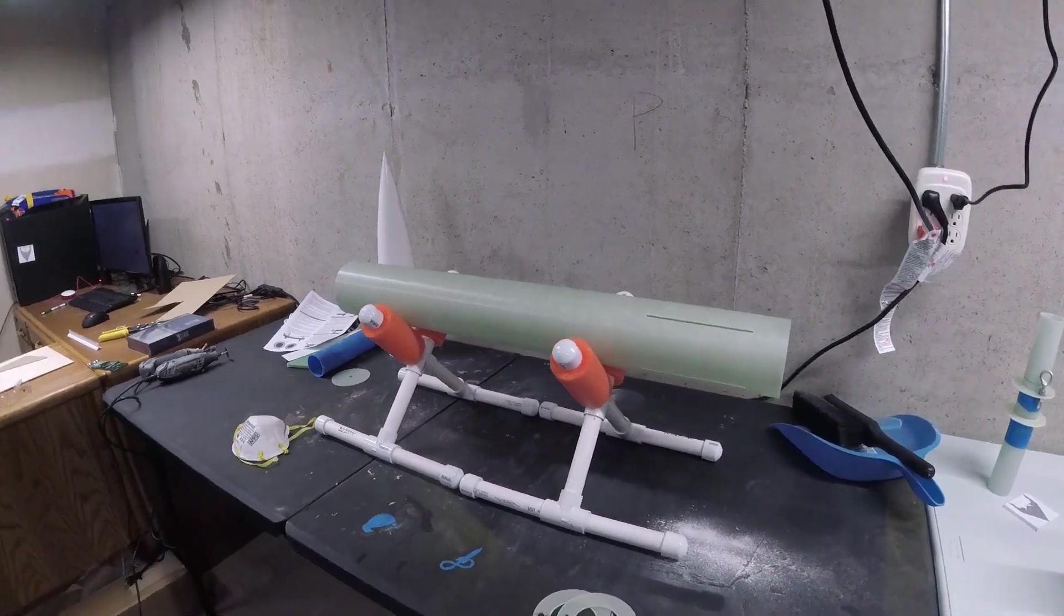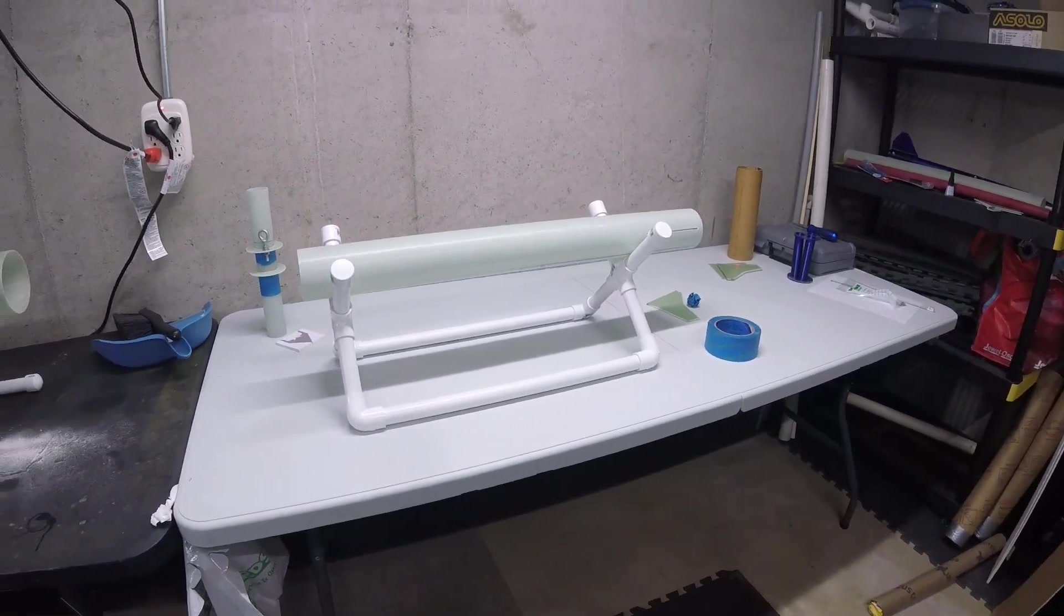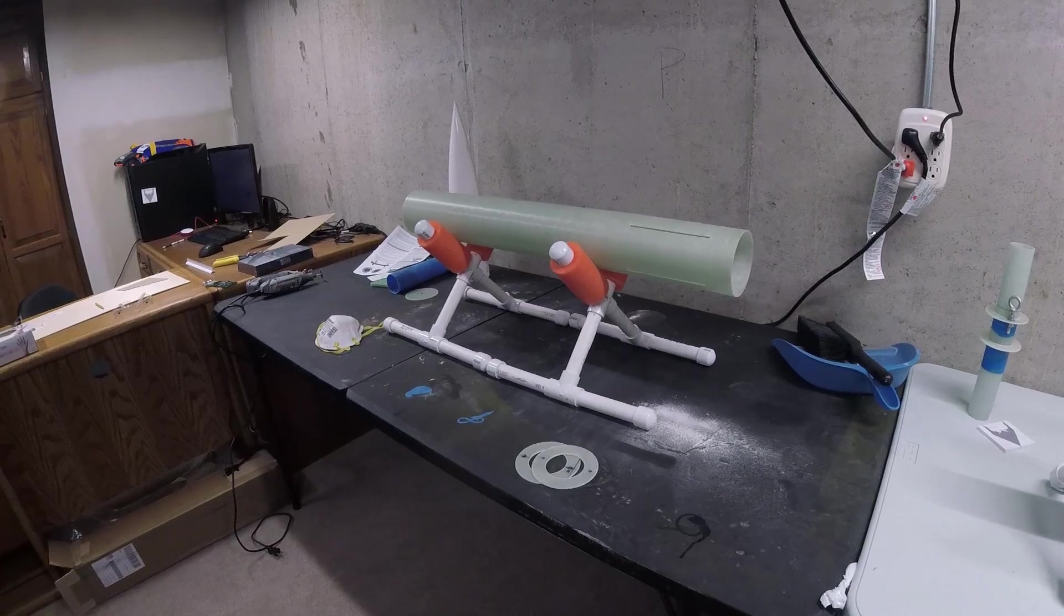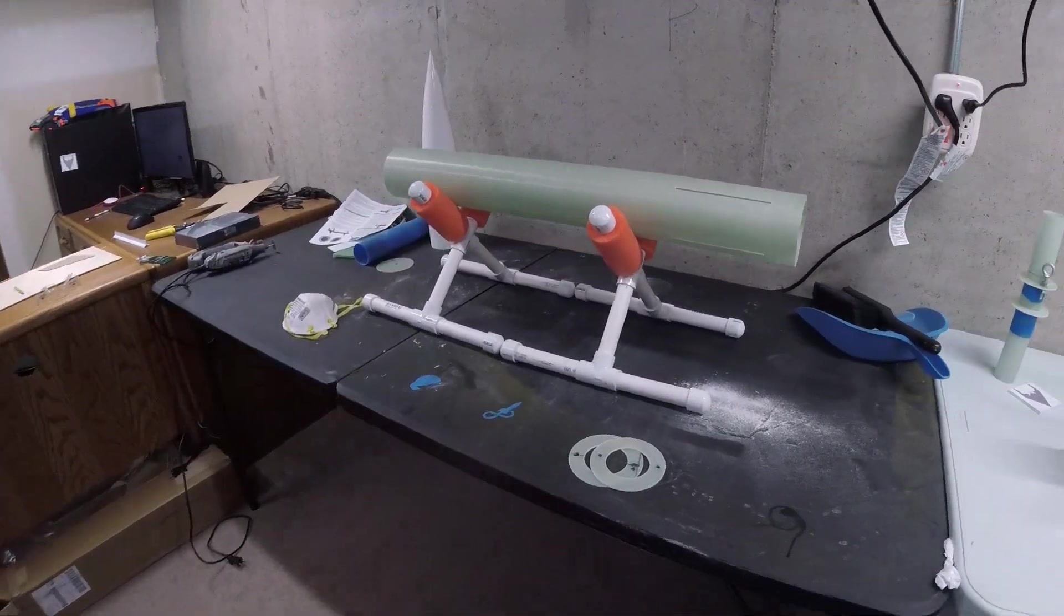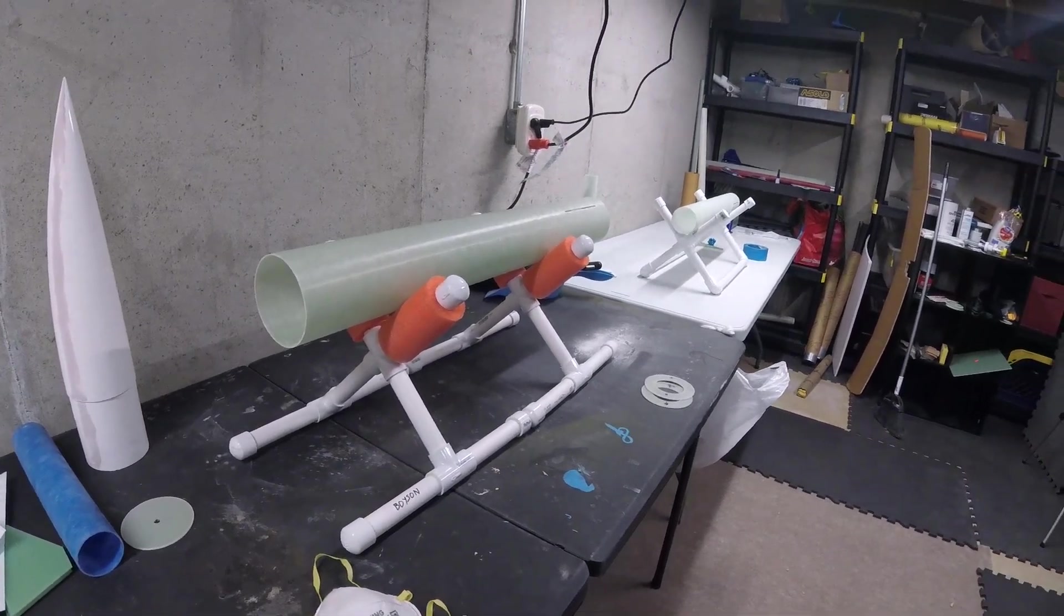But that's just simply two different styles of rocket stands that you can build out of three quarter inch PVC that you can find at your local hardware store. It's a pretty easy thing to put together and a handy little tool to have in your kit.